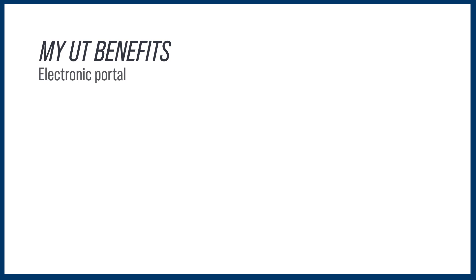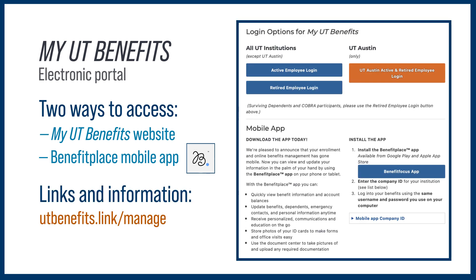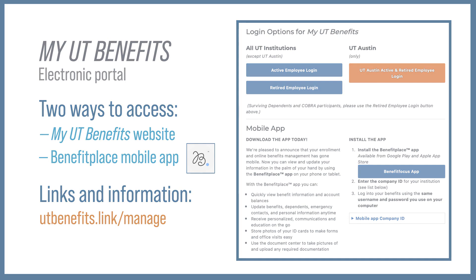Make your enrollment elections in the My UT Benefits electronic portal. Access it via the web or through the Benefit Place mobile app. Visit utbenefits.link/manage for sign-on information and links to the online portal and app.